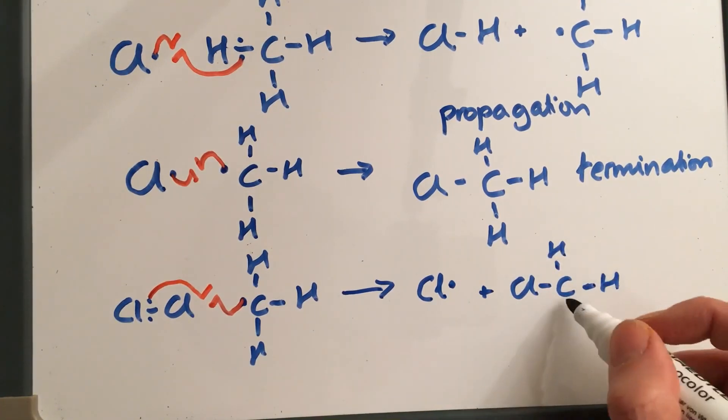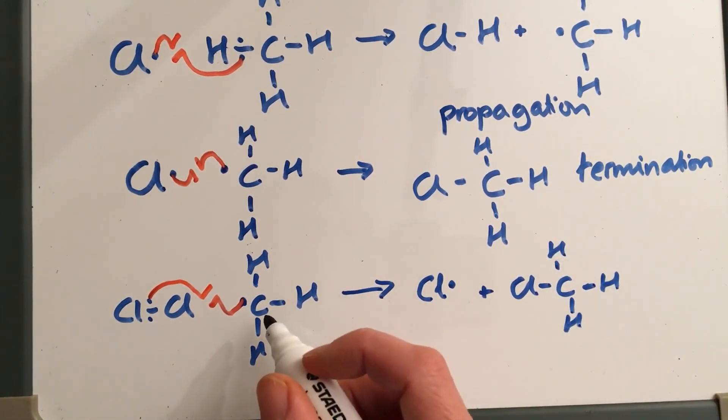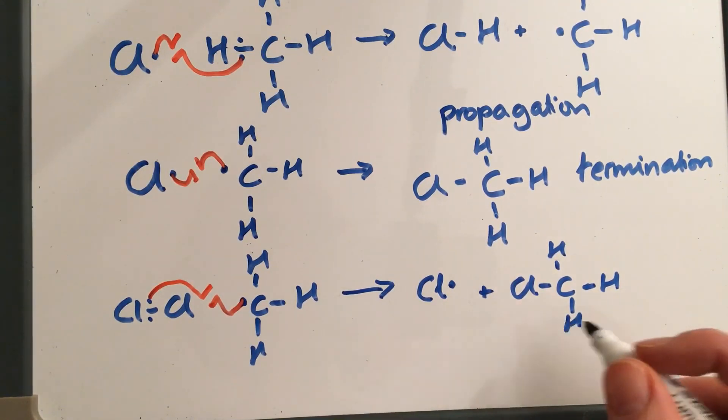So we started with a methyl radical, we finished with a chlorine radical - so this step here is another example of propagation.